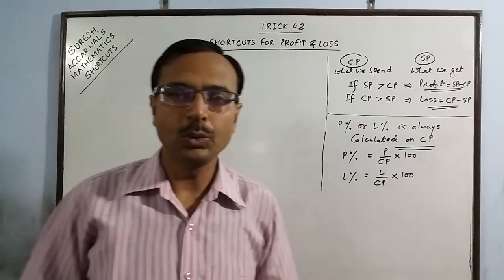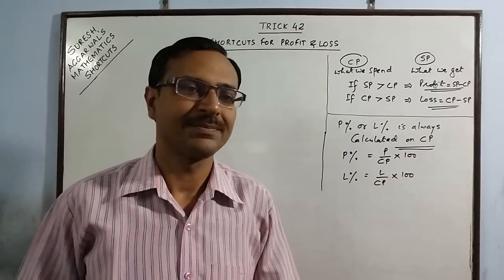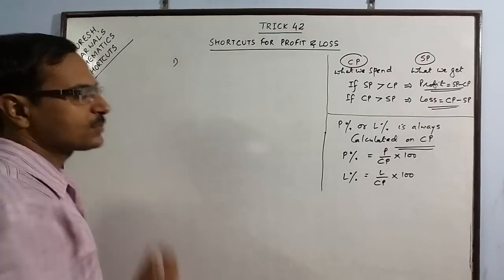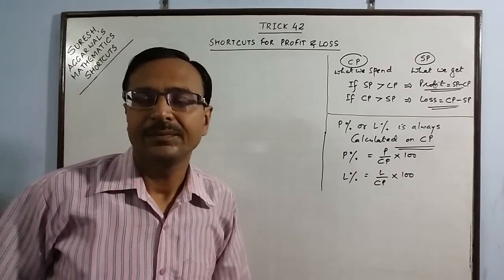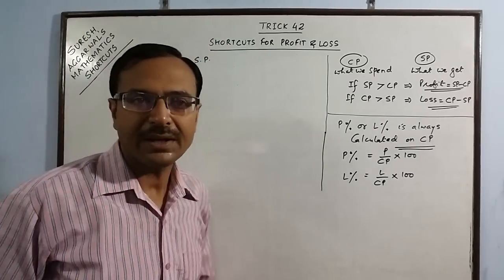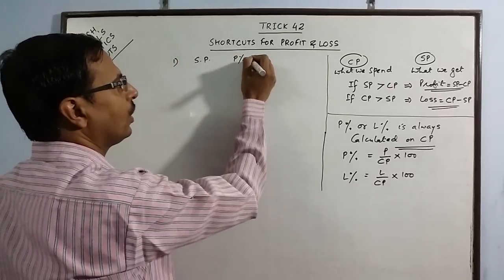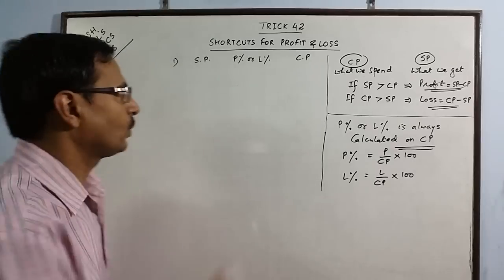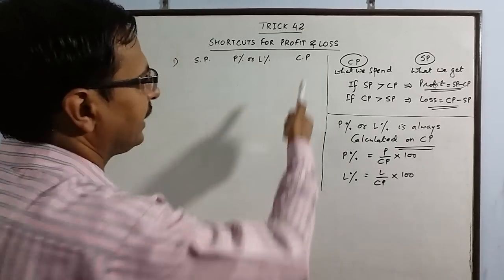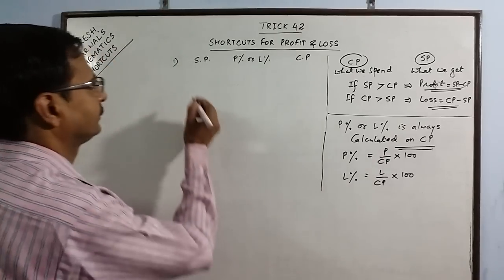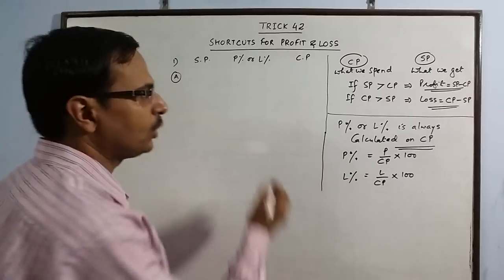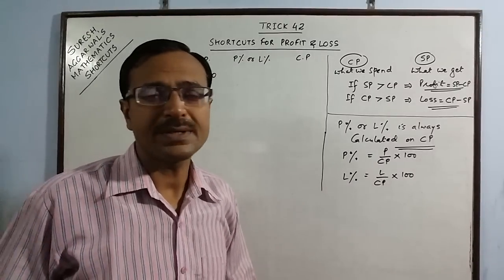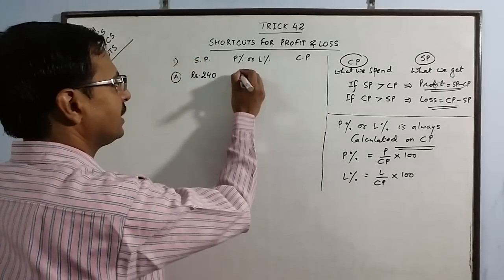This is all we need to solve all higher, complicated problems of profit and loss. Let us deal with a very common problem: when we are given the selling price and the profit percent or loss percent, and we have to calculate the CP. Suppose an item is sold for Rs. 240, and when a shopkeeper sells it at Rs. 240, he gets 20% profit. I want to know what is the cost price.